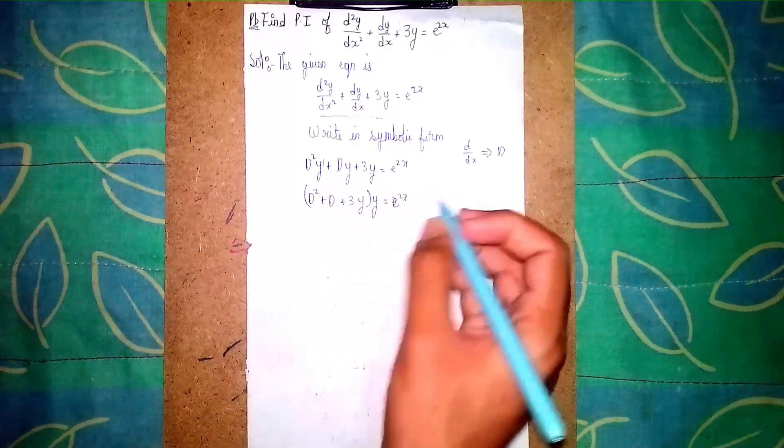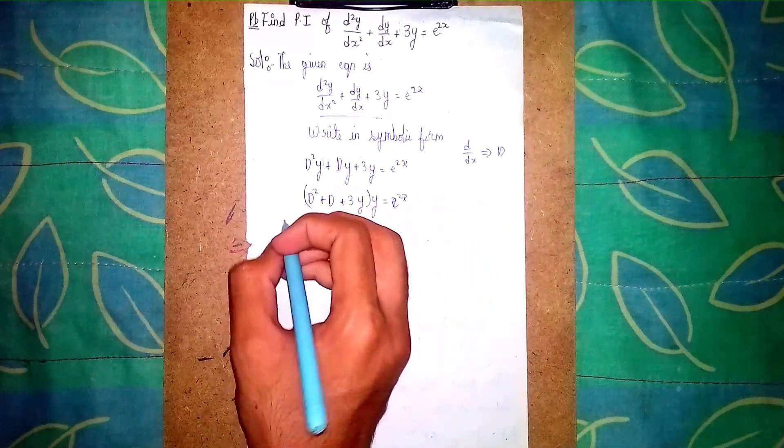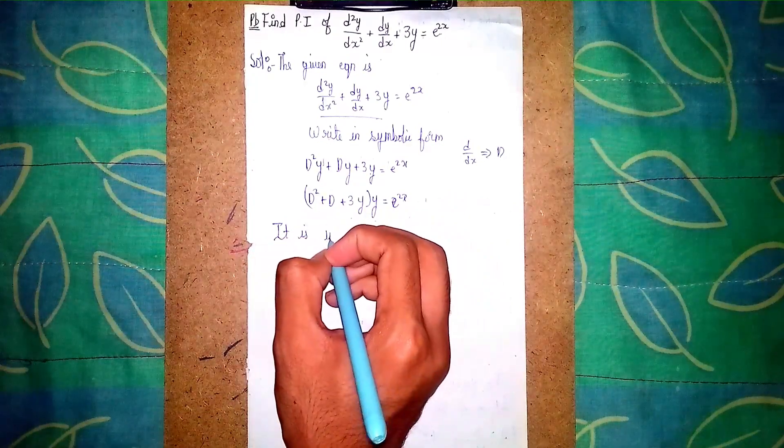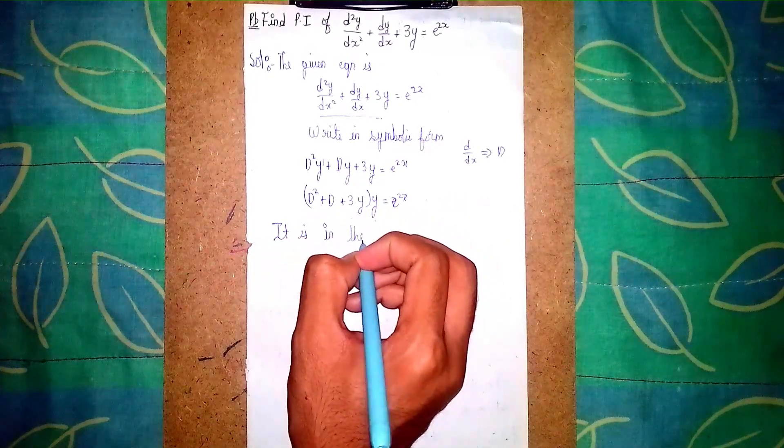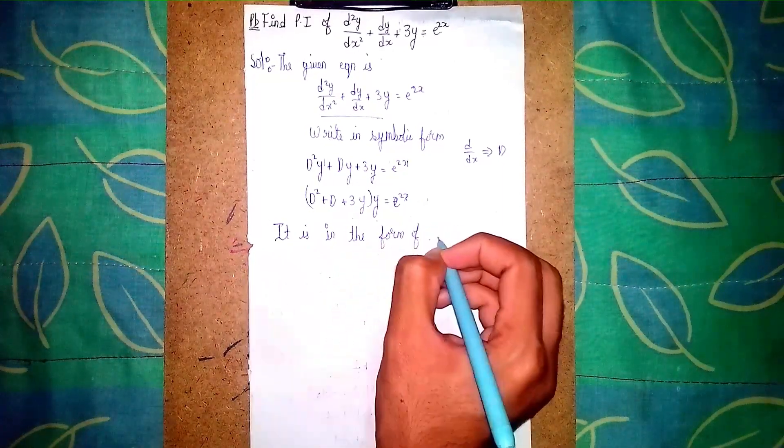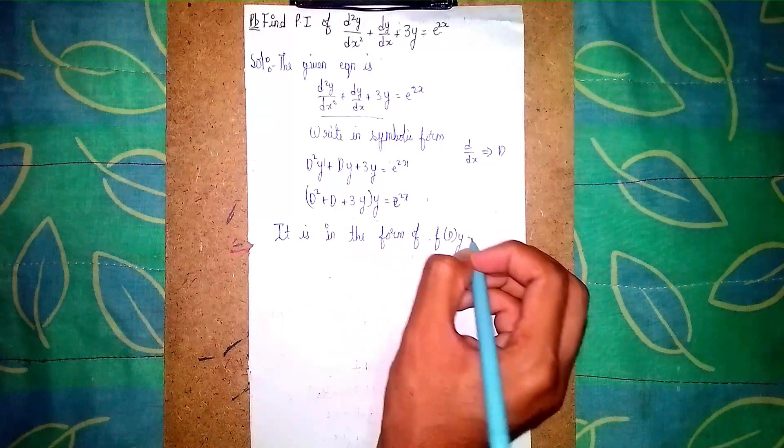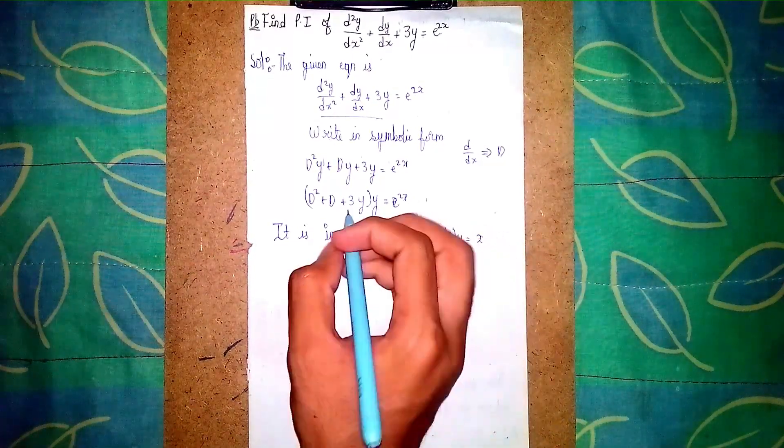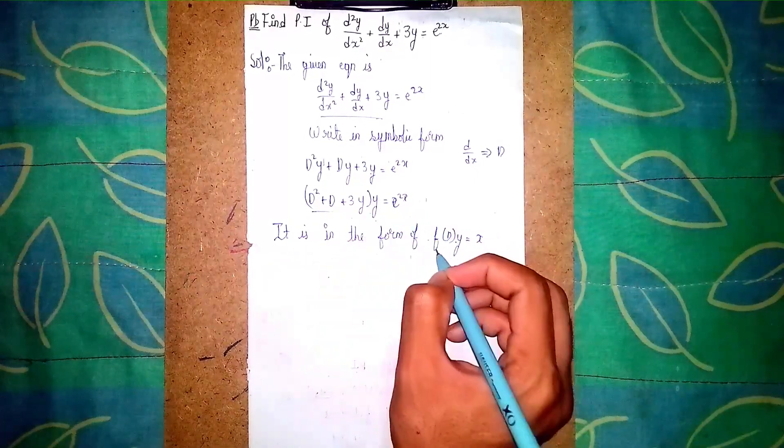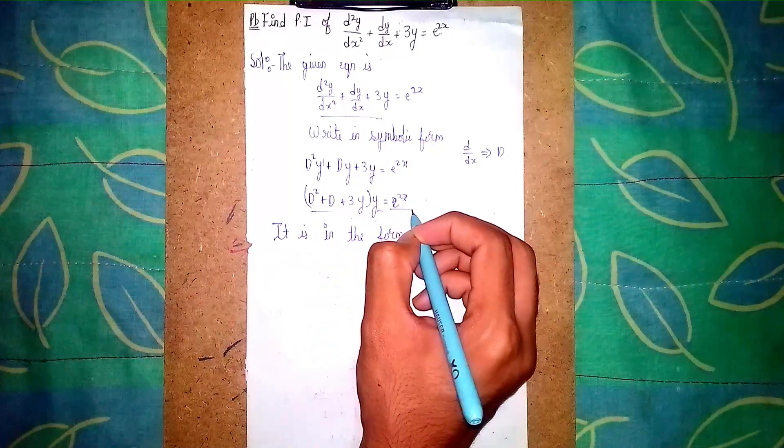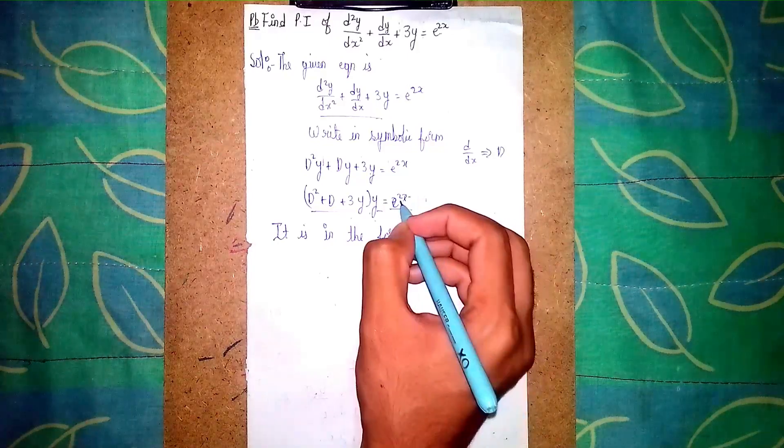Now write this equation. It is in the form of f(D)y = x. To find the particular integral, this is f(D), this is y, and this whole function is x - e^(2x).